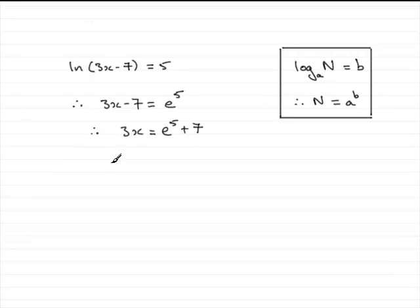And then divide both sides by 3, and you get x equals E to the 5 plus 7, all divided by 3. Nice easy question then to start off with.